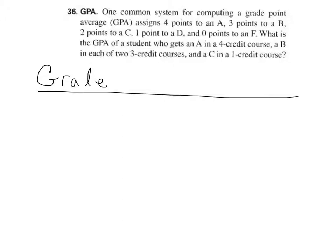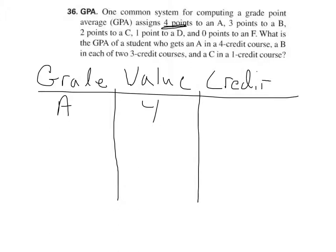We got an A. I'll add a value column. I'll write the word value, but what I'm going to do is transcribe these four points, three points, et cetera. So an A is worth four points, and that was in a four-credit course.